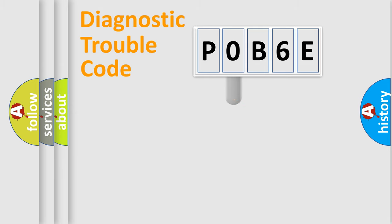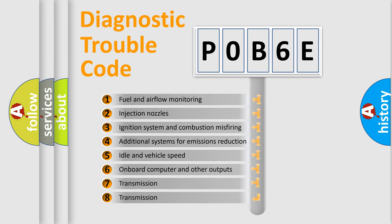This distribution is defined in the first character code. If the second character is expressed as zero, it is a standardized error. In the case of numbers one, two, three, it is a car-specific error. The third character specifies a subset of errors. The distribution shown is valid only for the standardized DTC code.